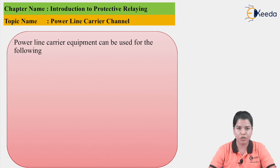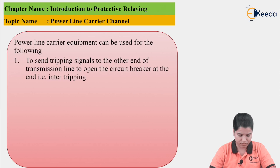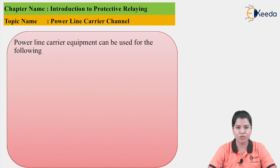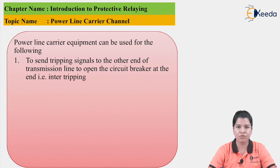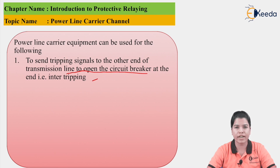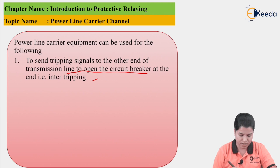The power line carrier equipment can be used for the following functions. First is to send the tripping signal from one end to another end, so as to open the circuit breaker at the other end of the transmission line. This is called inter-tripping. If a fault has occurred, the circuit breaker contacts should open. Usually the signal to open the contacts is sent by the relay, but for fast operation the power line carrier channel can be used to send the signal so that the contacts of the circuit breaker might open.